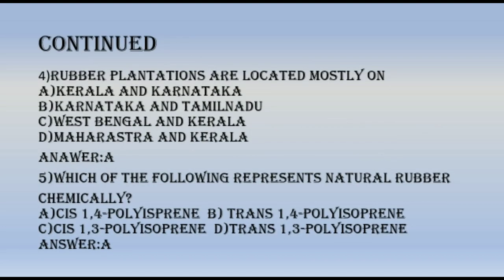MCQ 4: Rubber plantations are located mostly on? A. Kerala and Karnataka, B. Karnataka and Tamil Nadu, C. West Bengal and Kerala, D. Maharashtra and Kerala. The answer is A — Kerala and Karnataka.